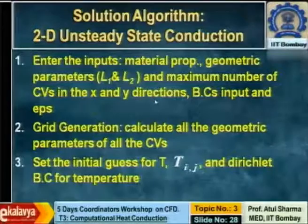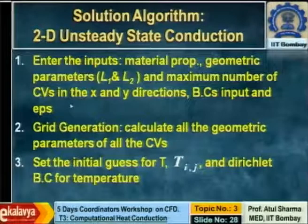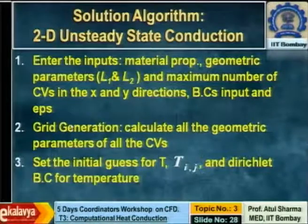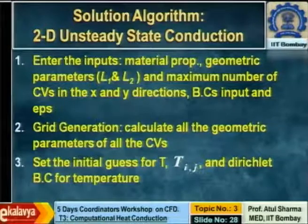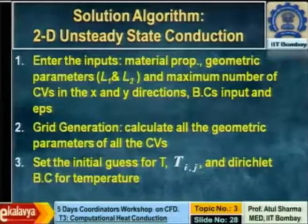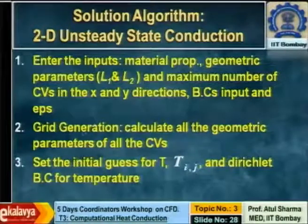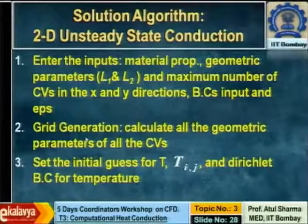There are certain boundary condition inputs corresponding to each wall, and then there is a convergence criteria to check whether your code has reached steady state. These are some of the inputs. Then there is grid generation. In this case we follow the simplest form of grid generation, where we calculate the coordinates of vertices at intersections of equispaced horizontal and vertical lines. When you generate grids you calculate the width of the control volume, distance between cell centers, surface areas, and the volume.